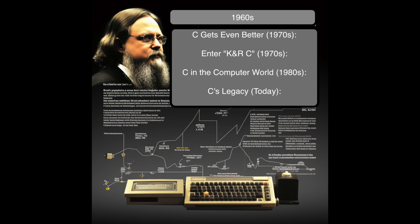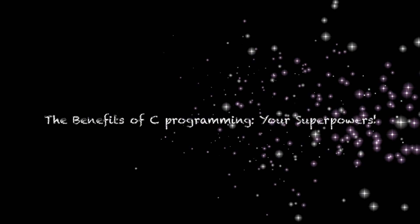C's legacy: Even today, C is still a superhero in the programming world. It's the foundation for many other languages like Python and C++. Many computer wizards still use C to make amazing things happen in the digital world. So C started in the 1960s, became super popular in the 1980s, and it's still a big deal today. Let's talk about the superpowers you'll gain by learning C — like having a super fast computer brain and a memory like a wizard.